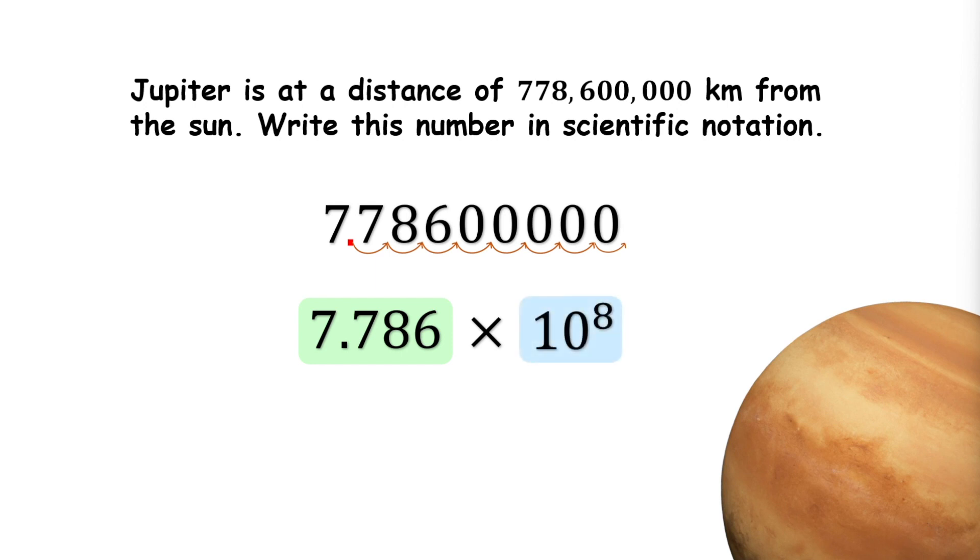Therefore, in scientific notation, Jupiter is at a distance of 7.786 times 10 to the power of 8 kilometers.